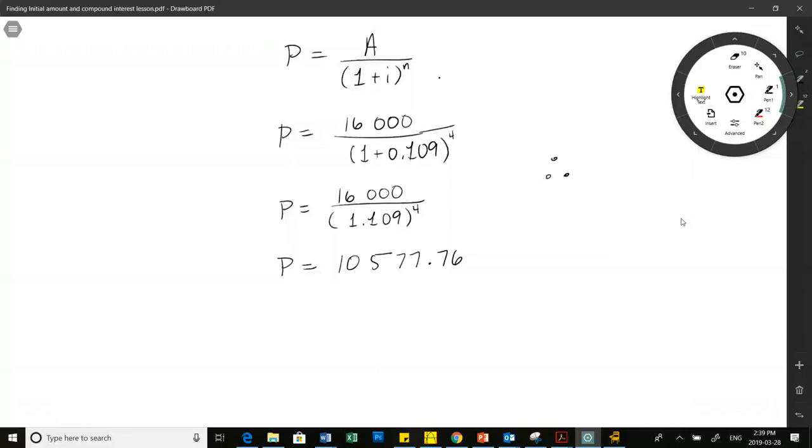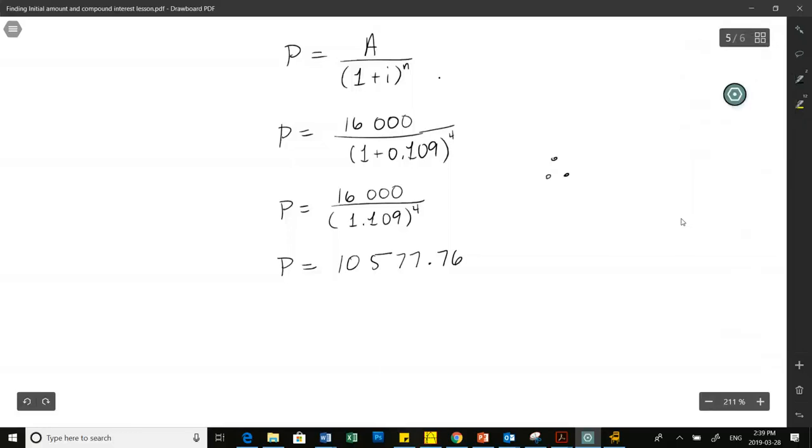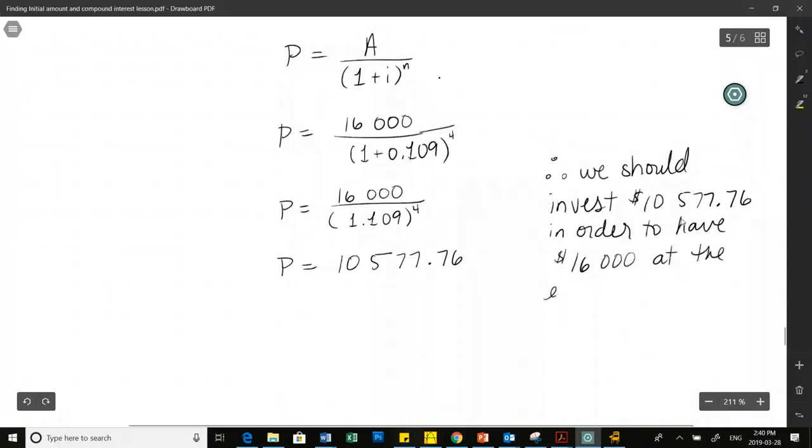So if we started by investing 10,500 of our own money, we actually have earned like $5,500 to get us to 16,000. I think that's a lot better than paying the full 16,000 ourselves. So if we can invest, of course we'd have to have that lump sum of $10,000, but if you can invest that money and make it work for you, then you can actually put it to work later. Therefore, we should invest $10,577.76 in order to have 16 grand in four years, at the end of university.